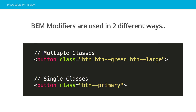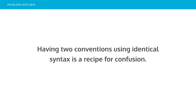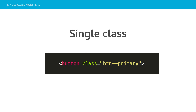The problem is that modifiers are used in two different ways. You can have multiple classes chained together — so you can have button, button-green, button-large — a lot of repetition. Or you could just have button-primary, which abstracts all the logic away and just gives you a nice big green button. Both techniques are valid but they lend themselves to different uses, so having two conventions using identical syntax in the same code base is really confusing and it may lead to unwanted styles — you might clash with your own code and have specificity issues.